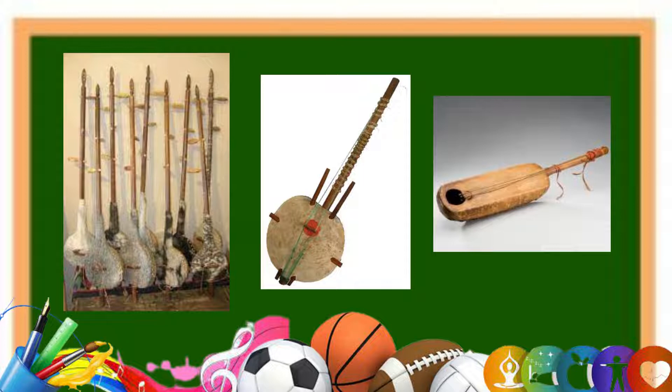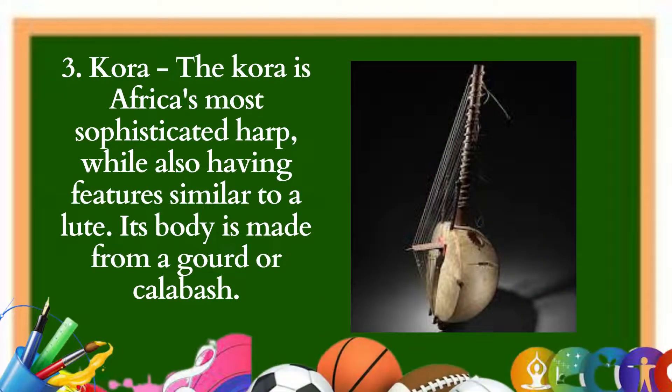3. Kora: The kora is Africa's most sophisticated harp, while also having features similar to a lute. Its body is made from a gourd or calabash; a support for the bridge is set across the opening and covered with a skin held in place with studs. The leather rings around the neck are used to tighten the 21 strings that give the instrument a range of over three octaves. The kora is held upright and played with the fingers.